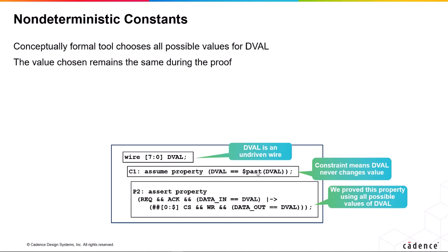So we know that DEVAL never changes value, but we haven't said what value it is. Now if we write a property like this to say if we've got a REC and an AC and the data_in equals DEVAL, whatever value that may be,